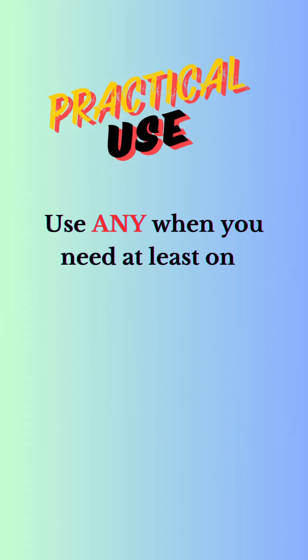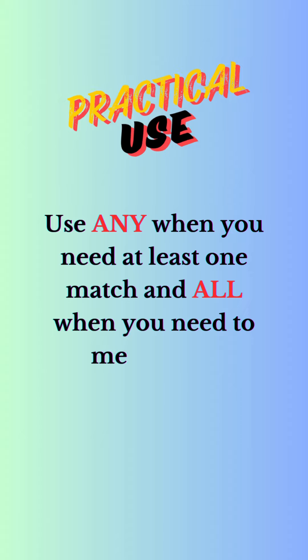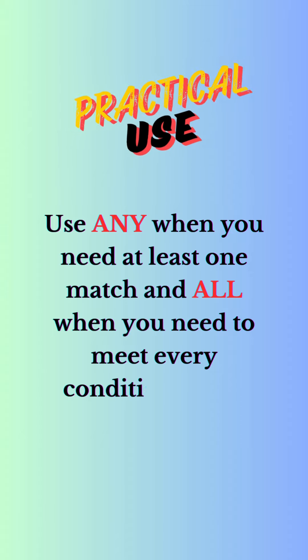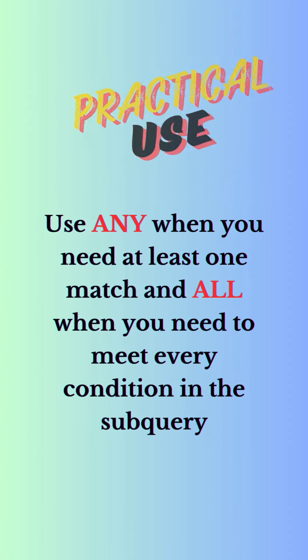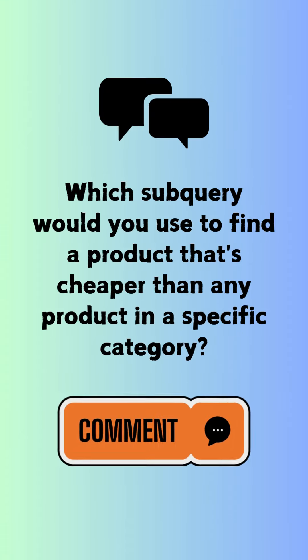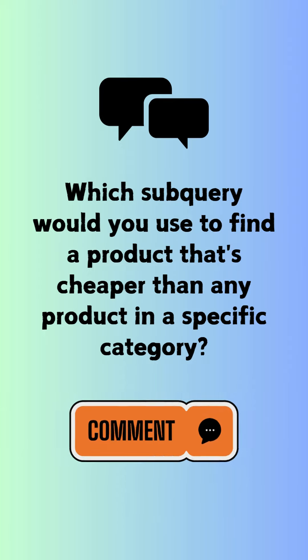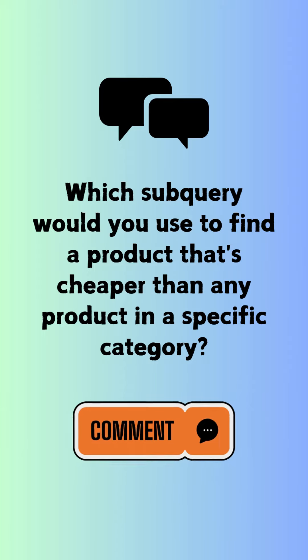Use ANY when you need at least one match, and use ALL when you need to meet every condition in the subquery. Which subquery would you use to find a product that's cheaper than any product in a specific category? Comment below.